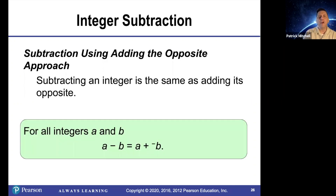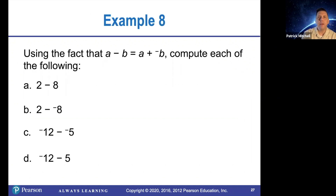For all integers a and b, a minus b is equal to a plus the opposite of b — add the opposite. Use the fact that a minus b equals a plus the opposite of b to compute each of the following.